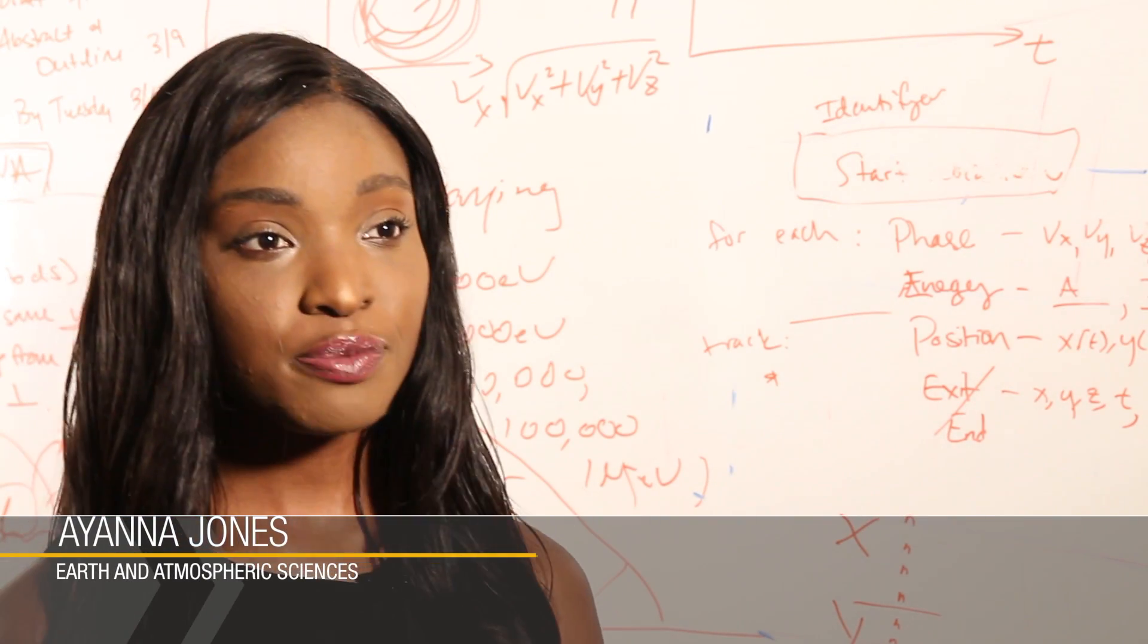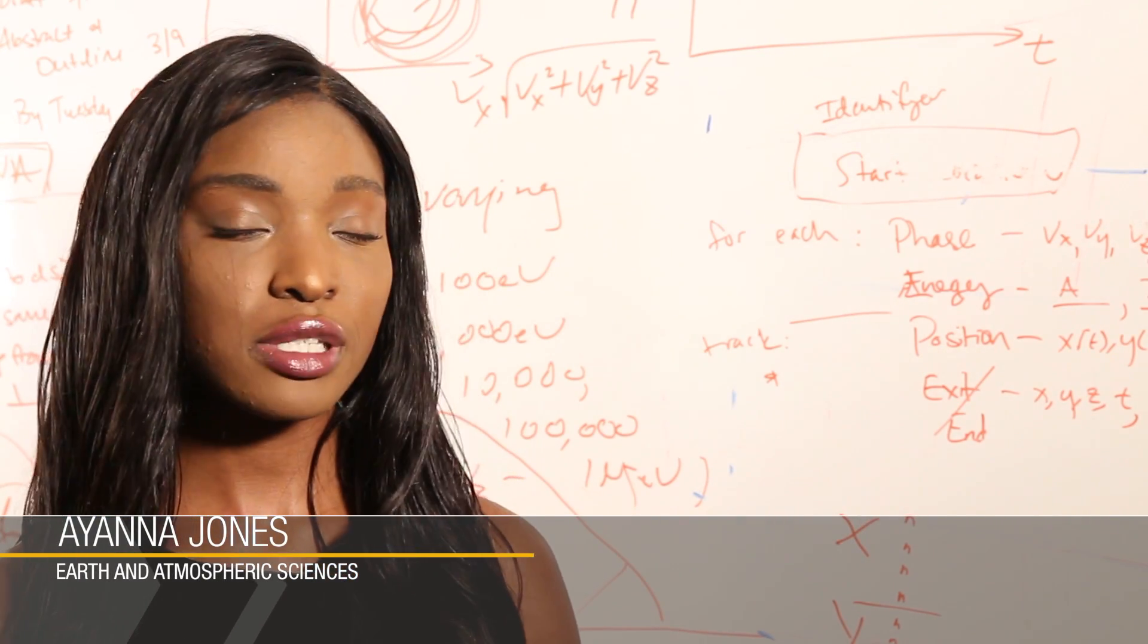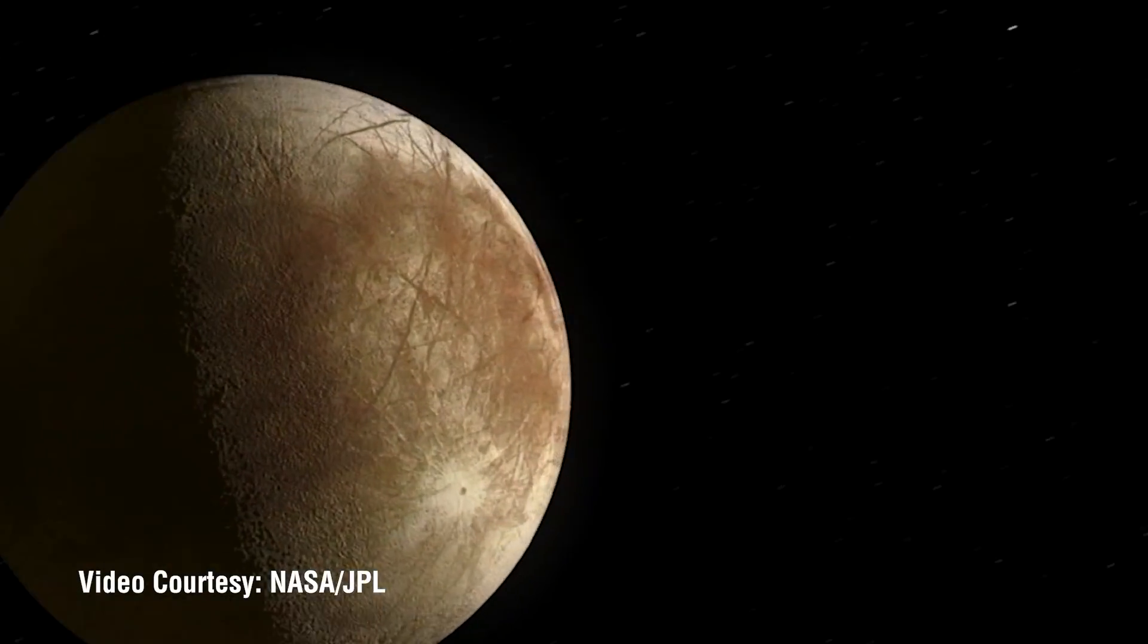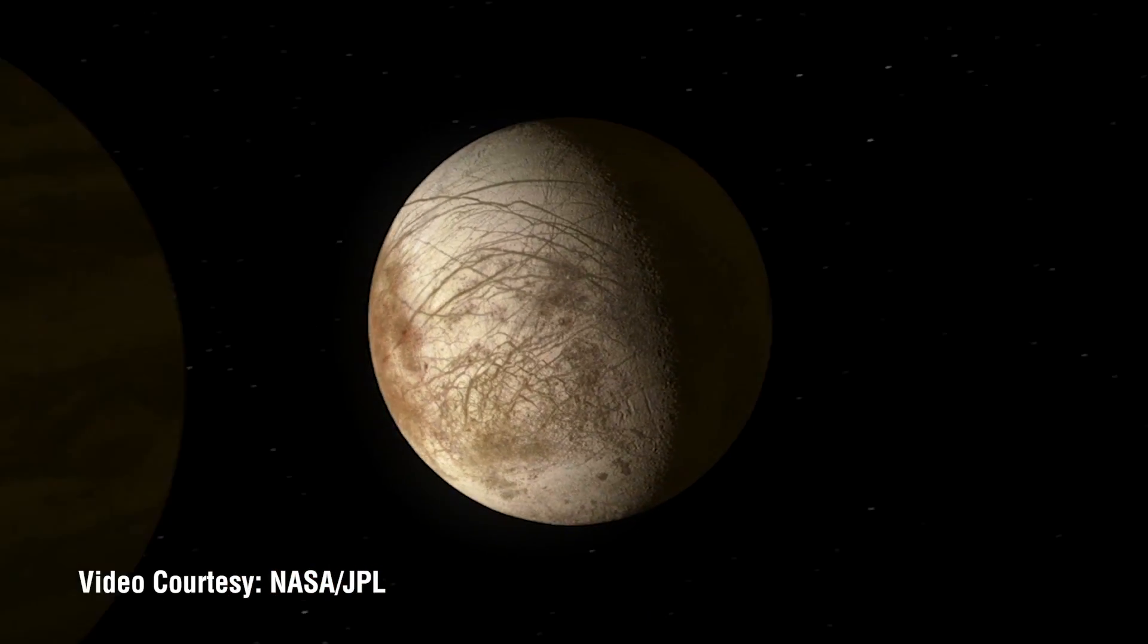Europa is an icy moon of Jupiter. It is one of the Galilean moons that was discovered by Galileo Galilei and it has been a moon of interest as we have discovered that Europa has a subsurface ocean.